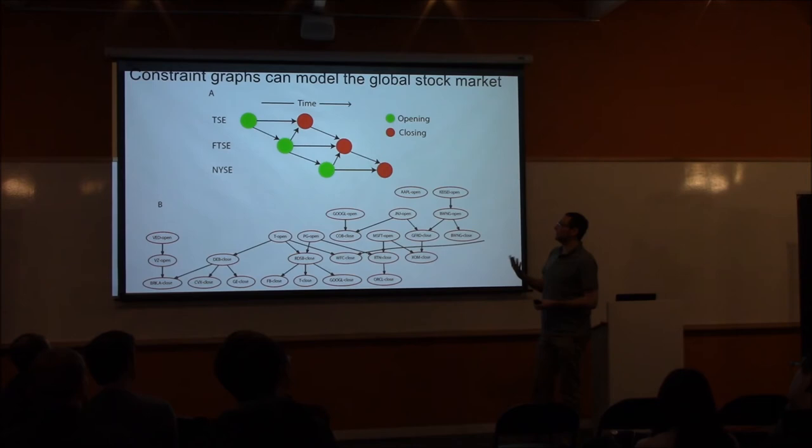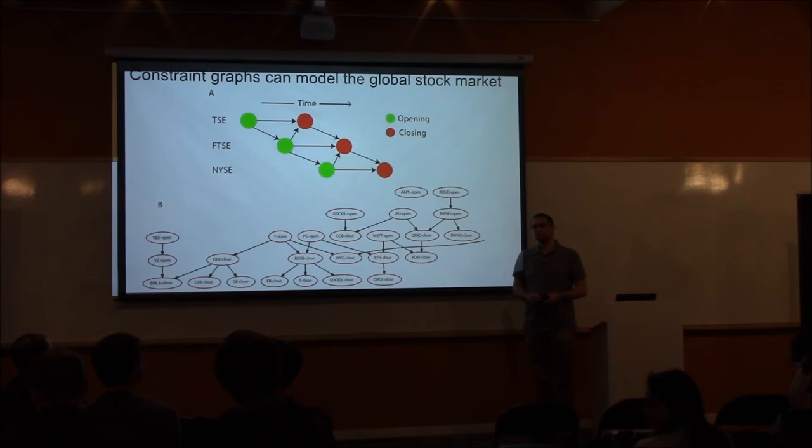Question: You'd have continuous dependency throughout the day — one market continues to affect the other. Answer: Yes, here we're only modeling the opening and closing prices, not continuous prices throughout the day. That's the approximation made. You could create a more complicated model where you model the current price based on other continuous values.